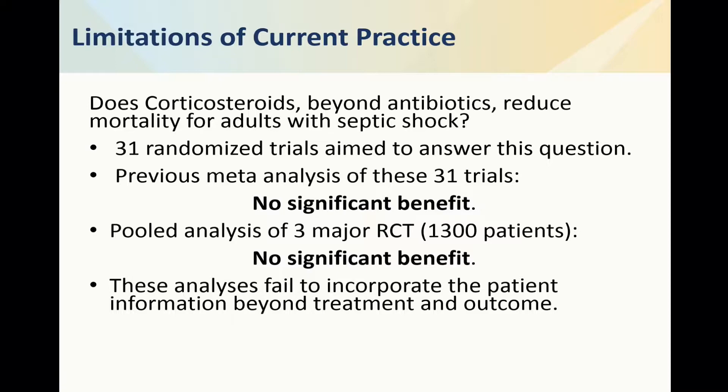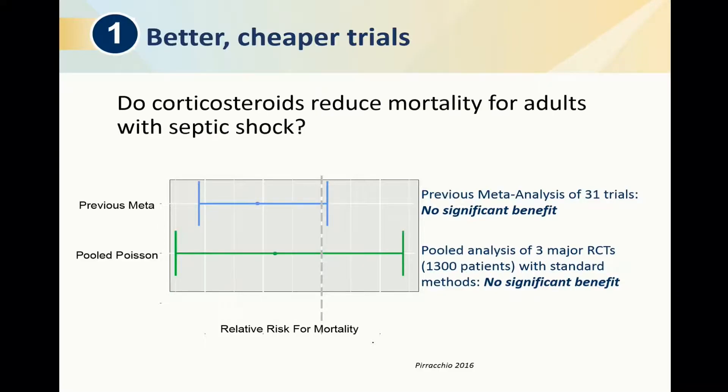So what's the type of approach used in these standard analyses of randomized trials? It's not really looking at the individual information of a patient. It just compares two groups and essentially looks at the proportion of deaths in the treatment group and the control group. No significant benefit — it's just a relative risk for mortality plotted with a confidence interval. If the confidence interval goes beyond one, that means you cannot conclude anything.